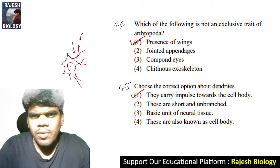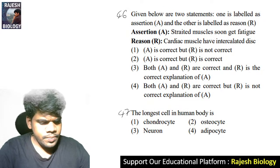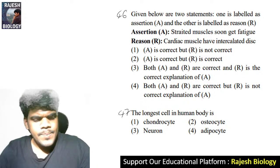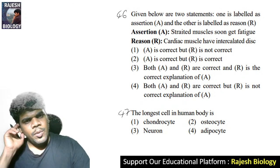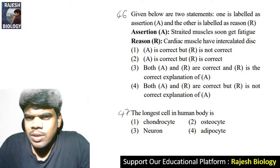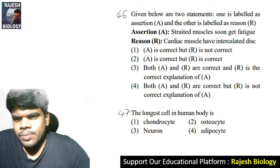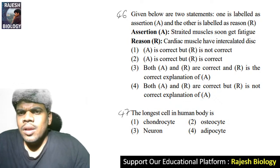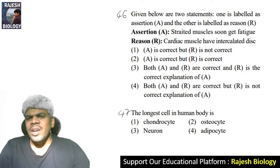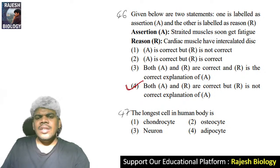Happy Ugadi to all students attending and making this session successful — to you and your family members also. Forty-sixth question: assertion — striated muscles soon get fatigue — correct. Cardiac muscles have intercalated discs — also correct, but it is not a correct explanation for the assertion.